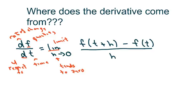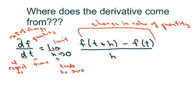This is your change in value of quantity, the numerator. Alright, this is your new value, alright, this is your time interval, your H.